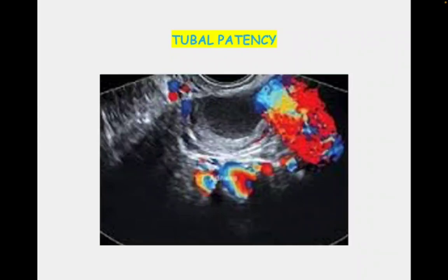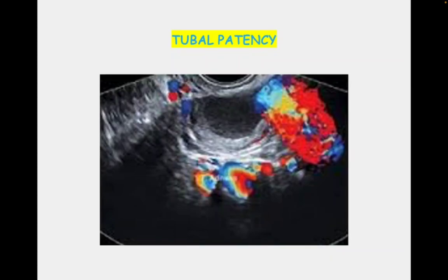Regarding tubal evaluation, one advantage is: suppose one tube is already blocked and only one tube is patent. To reconfirm patency — for example, if a patient had a tubal pregnancy and salpinectomy was done — you want to check whether the remaining tube is patent. You first do TVS; if there is no fluid in the pouch of Douglas, you instill fluid into the endometrial cavity, then repeat TVS. Presence of fluid in the pouch of Douglas confirms the tube is patent. This can avoid more invasive methods like HSG and hysterolaparoscopy.